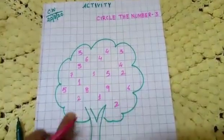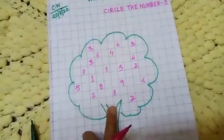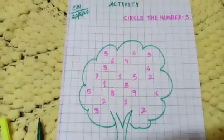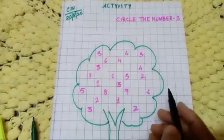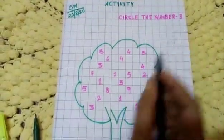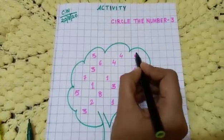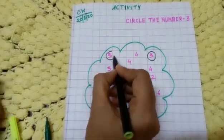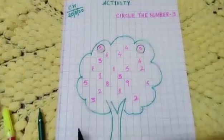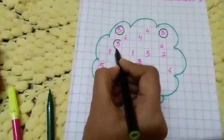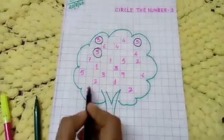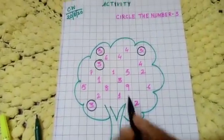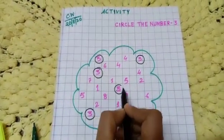Find out how many threes are here and circle them. This is one three — circle it. Here is another three. Again find where is another three — this one. Where is another three — this one. Circle it. Where is another one — this one.